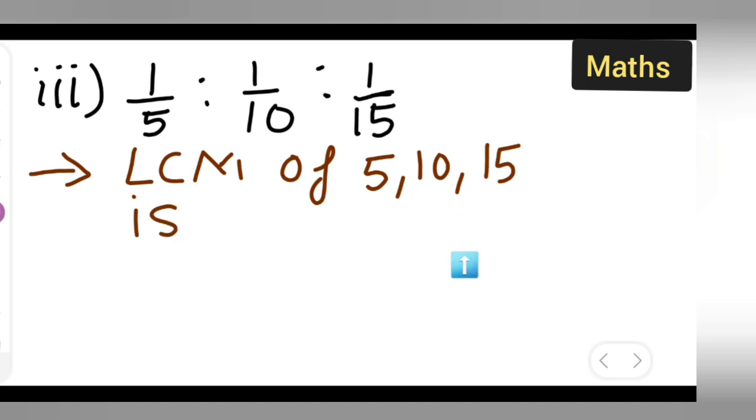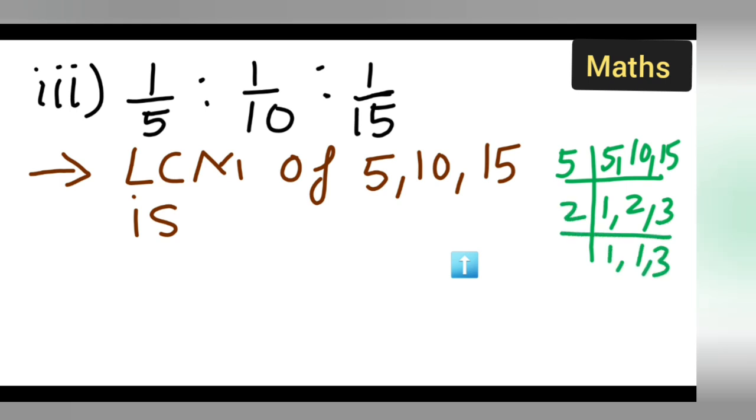Let us take down the LCM first. 5, 10, 15. Let us check in the table of 5 itself: 5 ones are 5, 5 twos are 10, 5 threes are 15. Then 2 ones are 2, and 3, keep it as it is. Next will be 3 and then 1, 1. LCM is equal to 5 multiplied by 2 multiplied by 3, which is equal to 5 twos are 10, 10 threes are 30. LCM is 30.